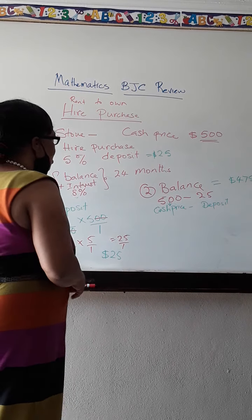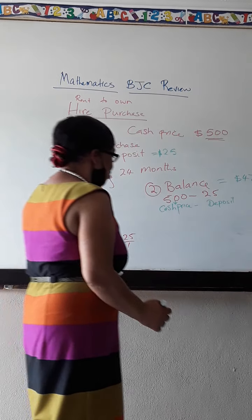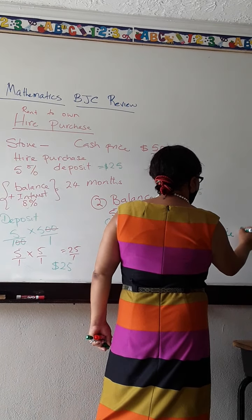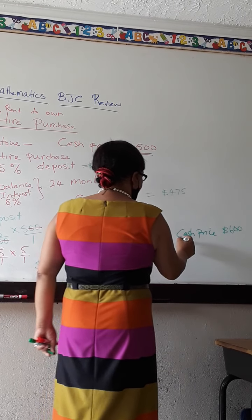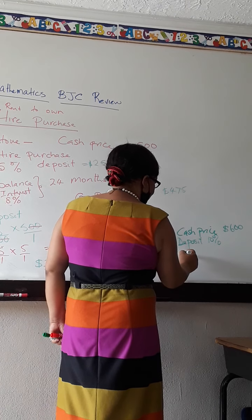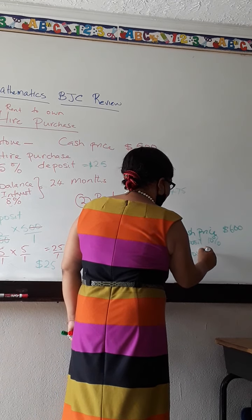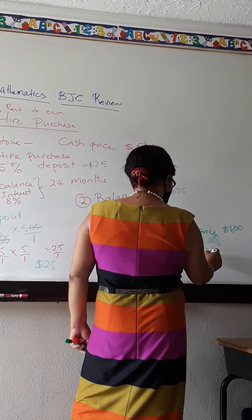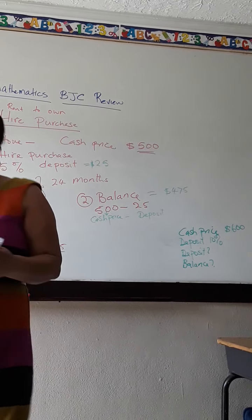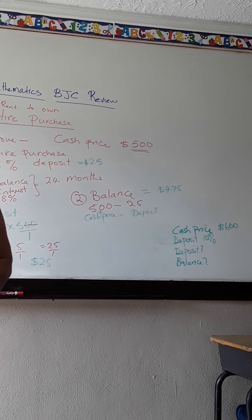Now, you're going to work this problem for me. You're going to take the same problem and buy the stove. It's your problem now. And the cash price for me, cash price is $600. And the deposit is going to be 10% of that. And you're going to calculate the deposit for me. And you're going to calculate the balance. And you're going to tell me exactly what the answer will be to that problem. Now, let's go ahead and work.